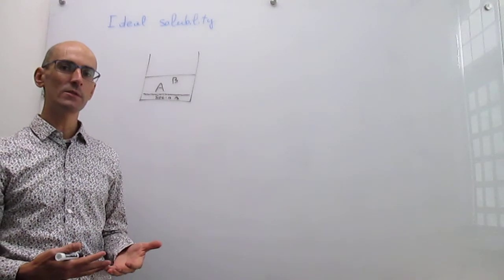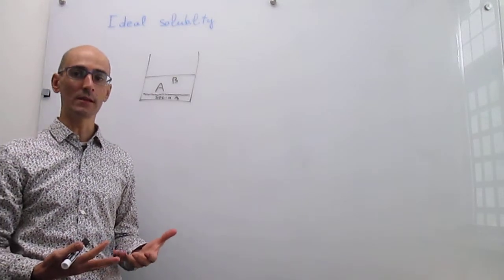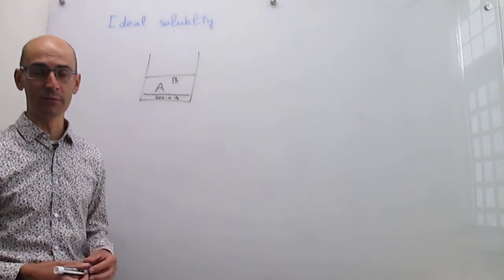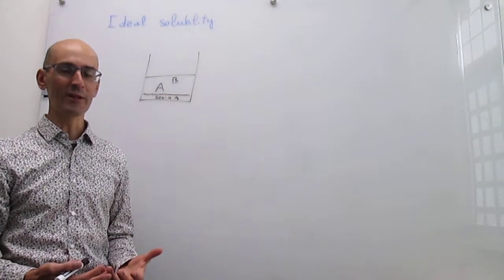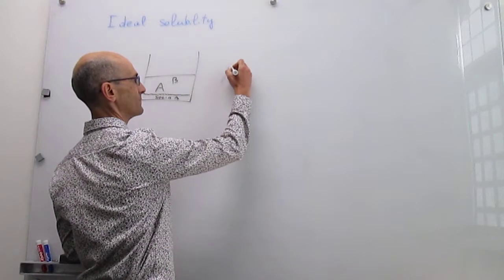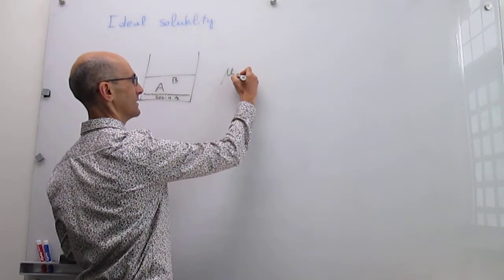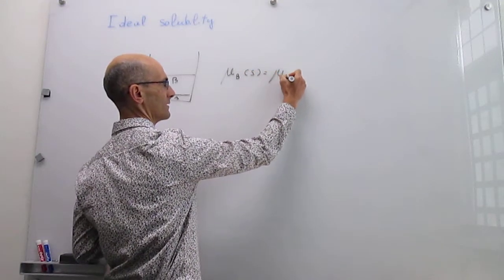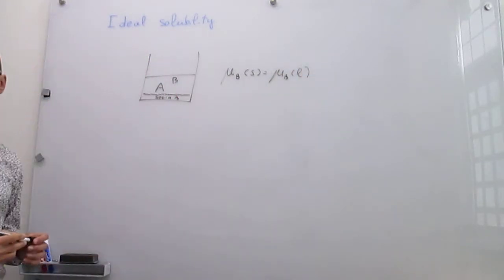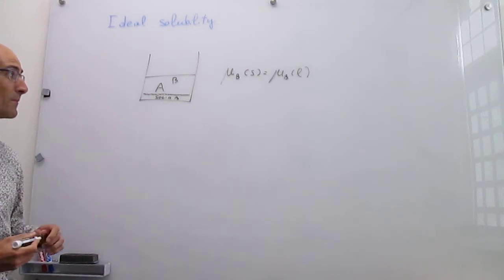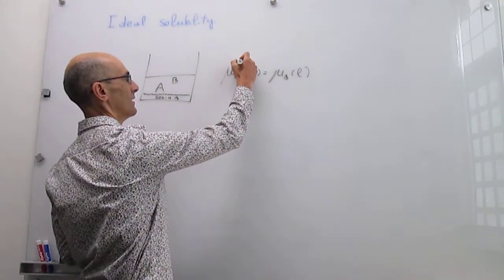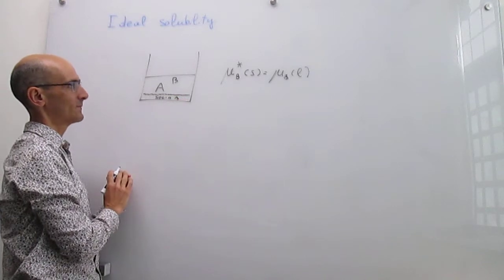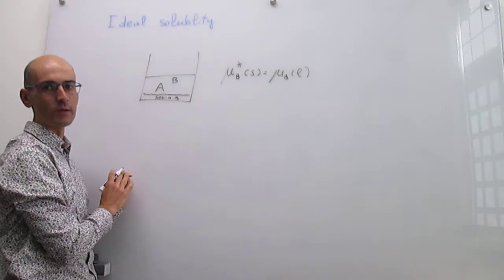We can establish a comparison between the Gibbs energies of the solution phase for the solute and the solid phase, which is pure solute. If we are at equilibrium, the chemical potential of solute B in the solid has to be identical to the chemical potential of solute B in the liquid. The solute is pure in the solid phase — we denote that with a star — there's no solvent in the solid phase. That happens when you have a saturated solution.